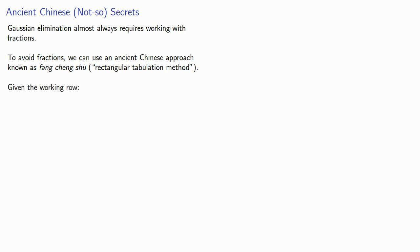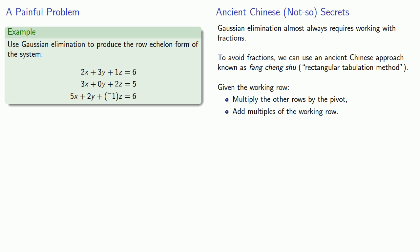Given whatever row we happen to be working on, we'll multiply all of the other rows by the pivot, and then we'll add multiples of the working row to these other rows. So let's see how this works. Let's go back to that awful painful problem that got us those horrible fractions, but this time let's try and redo this problem using the Fang Cheng Shu method. So let's go ahead and set down our augmented coefficient matrix.